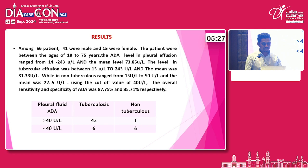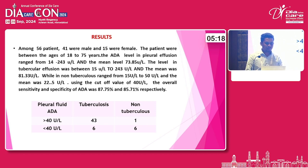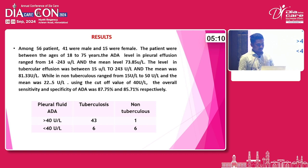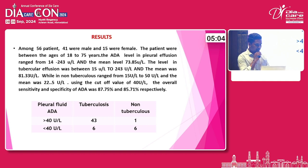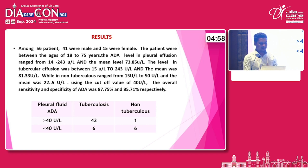Non-tuberculous ADA levels ranged from 15 to 50 units per liter, with a mean of 22.5 units per liter. Using a cutoff value of 40 units per liter, the overall sensitivity and specificity of ADA was 87.75% and 85.71% respectively. 43 tuberculous patients had an ADA level greater than 40, while 6 tuberculous patients had ADA less than 40. One non-tuberculous patient had ADA greater than 40, and six non-tuberculous patients had ADA less than 40.